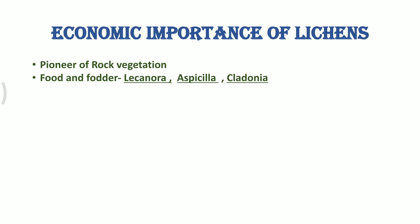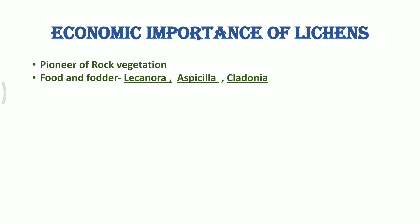Second, lichens are also used as food for some organisms, especially wood lice, mites, snails, and larvae of some insects, which are all dependent on Lecanora and Aspicilia for their food. Cladonia is a reindeer moss found in arctic regions where reindeers, musk ox, and other animals feed on it.